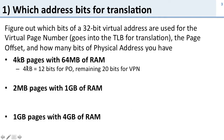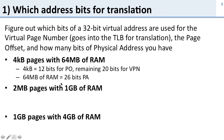For four kilobyte pages we have 12 bits for the page offset, because we need 12 bits to index into four kilobytes. With a 32-bit total virtual address, the remaining 20 bits are for the virtual page number. For 64 megabytes of RAM we need 26 bits of physical address.